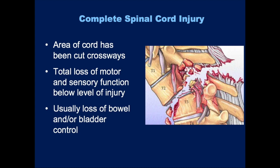The first type is a complete spinal cord injury. Here you can see the vertebral body is completely fractured through and the spinal cord is obliterated — the complete cord has been severed. This is a devastating injury with total loss of motor control and sensory function below the level of the injury. This is when you will often see loss of bowel or bladder control.